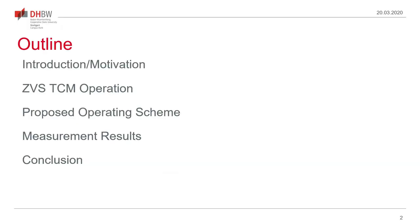First I will look at why we need this operation scheme, then I will briefly describe what triangular current mode operation is as I understand it in this presentation. Then I will propose my operating scheme for spread spectrum modulation and show with measurement results that this is feasible and can be used to reduce EMI and maintain zero voltage switching.